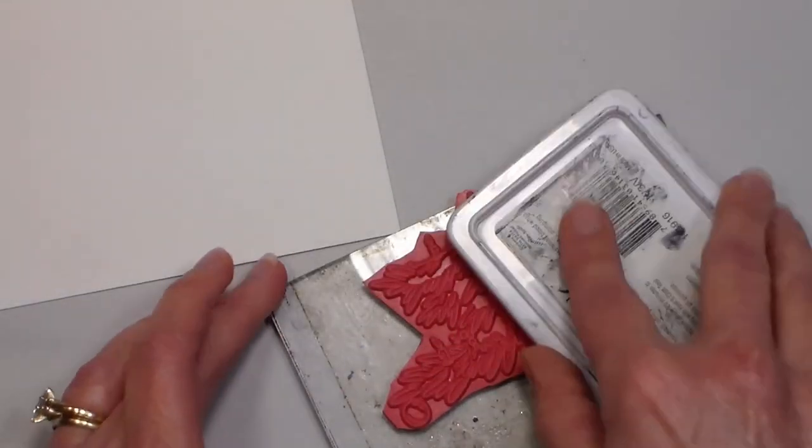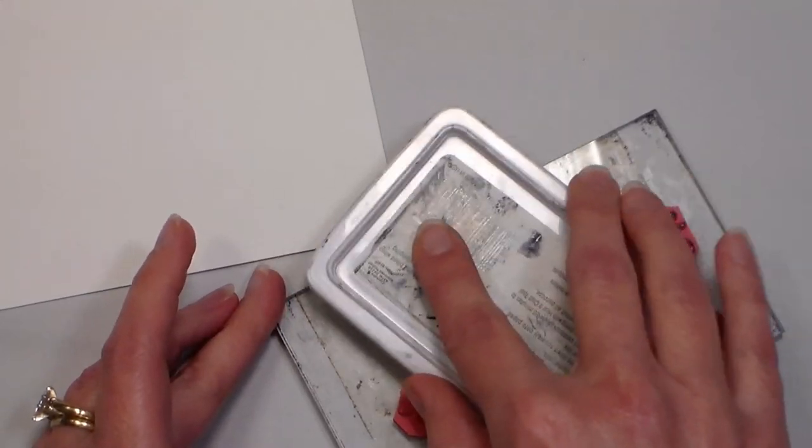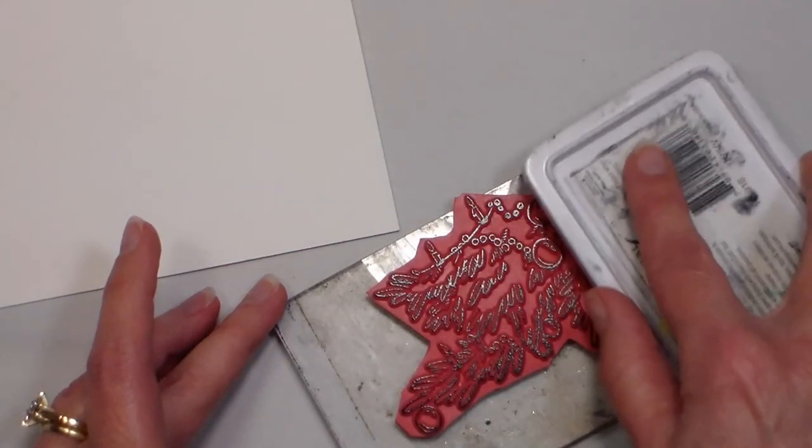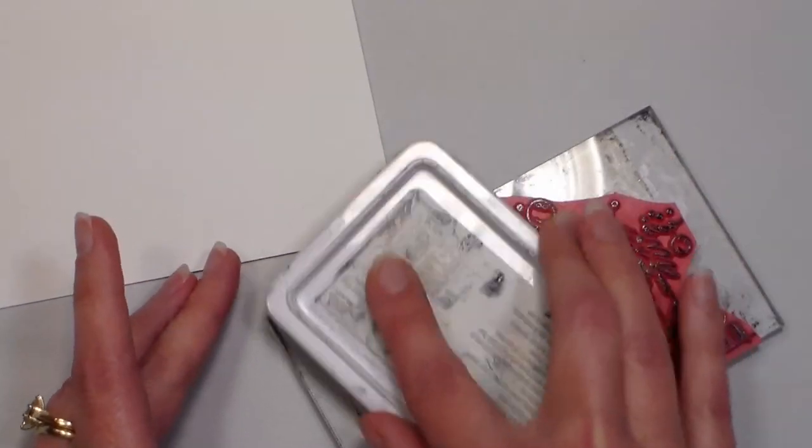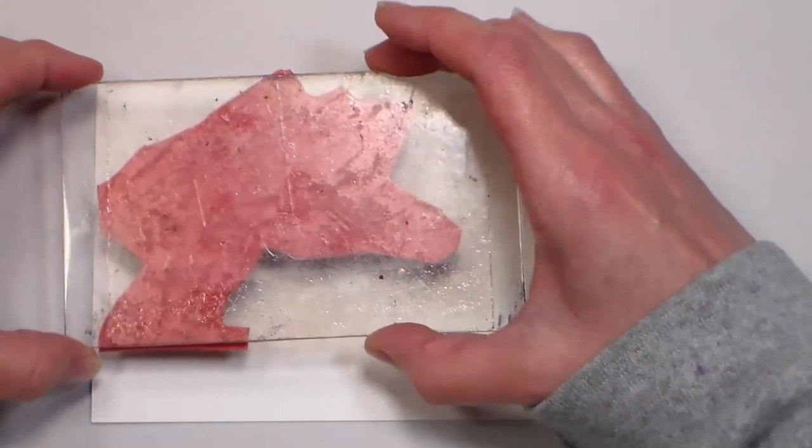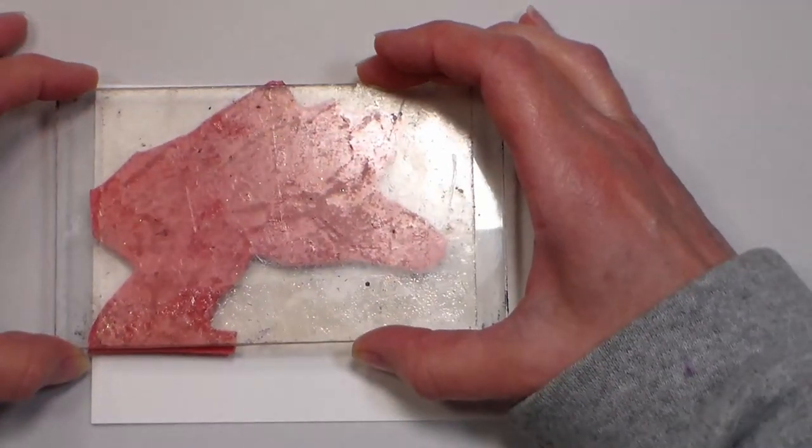I'm starting off with a piece of watercolor paper cut down to 4 by 6. This is the Aqua Bee watercolor paper. It comes in 6 by 9 sheets in packs of 50 for about $15 on Amazon. I really enjoy it for watercolor painting and also stamping because it's smooth enough to be able to stamp pretty accurately.